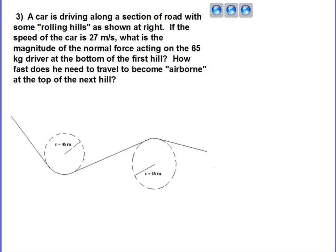Let's consider a car driving along some rolling hills as shown in the picture below. The car is traveling 27 meters per second. Sounds like some interesting questions to consider. Let's go ahead and dig in here.